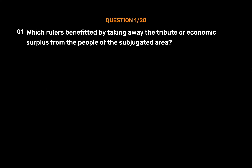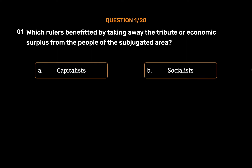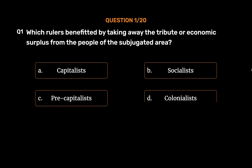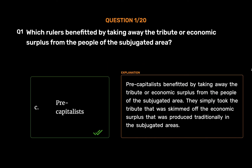Question 1: Which rulers benefited by taking away the tribute or economic surplus from the people of the subjugated area? Options: A. Capitalists, B. Socialists, C. Pre-Capitalists, D. Colonialists. The correct answer is Option C: Pre-Capitalists. They simply took the tribute that was skimmed off the economic surplus produced traditionally in the subjugated areas.